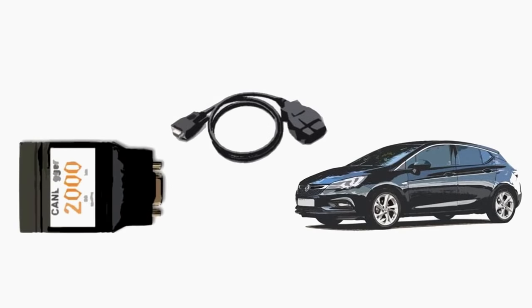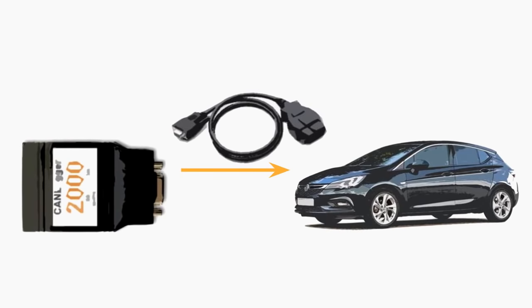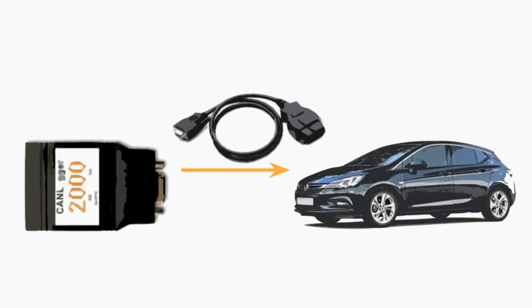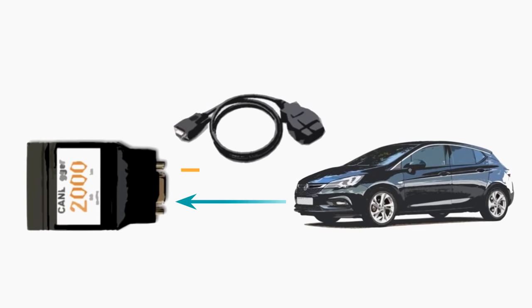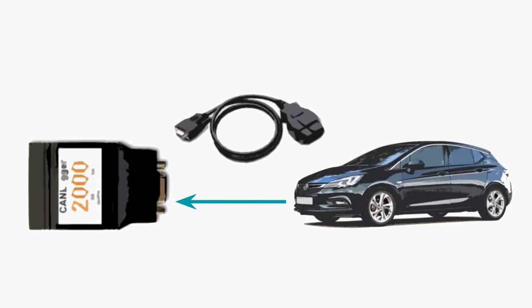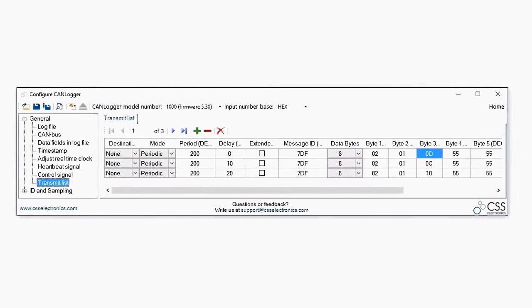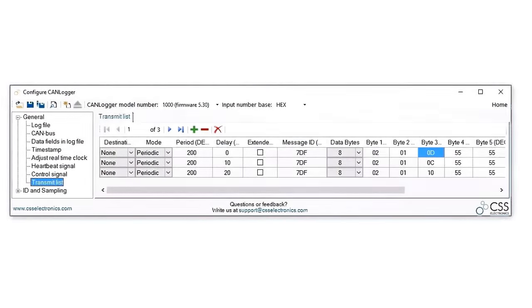To log OBD2 data, the CAN logger must request the data by submitting pre-specified CAN frames with specific Parameter IDs (PID) to the CAN Bus. When using the CAN logger X000, this can easily be configured in Canvas. For basics on OBD2, check out the simple intro to OBD2, or check the practical guides to logging OBD2 data or streaming it in Wireshark.